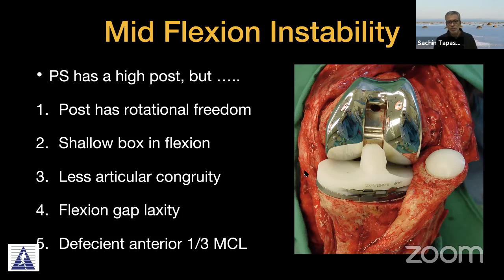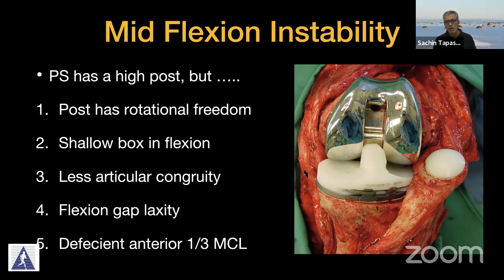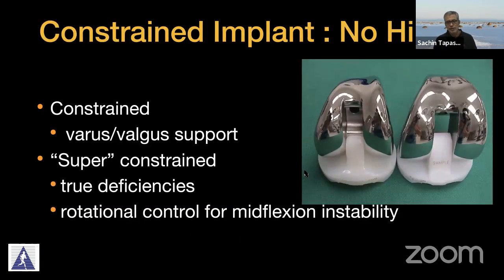Mid-flexion instability not recognized at the time of initial surgery — presenting with pain, laxity, and instability later — will require revision using a VVC or varus-valgus constraint implant. A simple PS implant will not be sufficient because the post in a PS still has rotational freedom and the articular congruity is not as great as with a VVC type implant. These patients will have a deficient anterior throat of the MCL and require revision to a non-hinged constraint implant like the VVC.